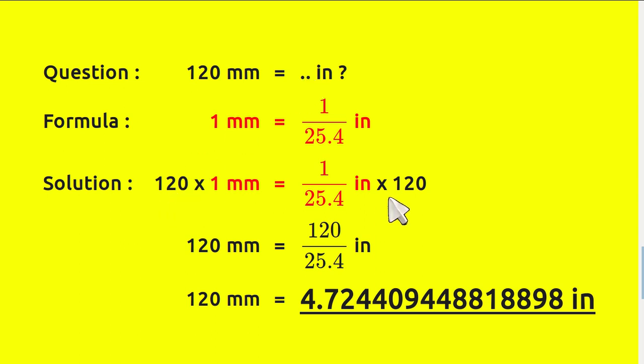Now let's continue to solve this problem. Multiply 120 and one, which gives us 120. And this number, one over 25.4, times 120. Just multiply 120 with one.